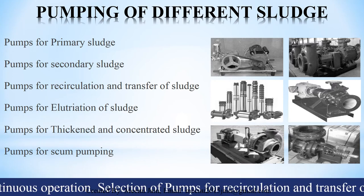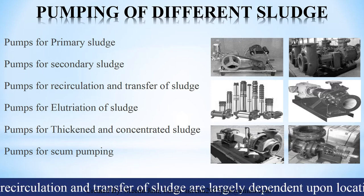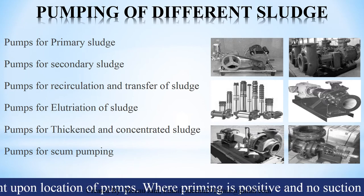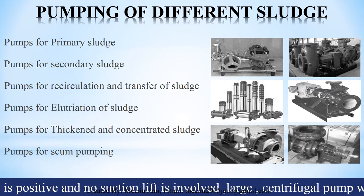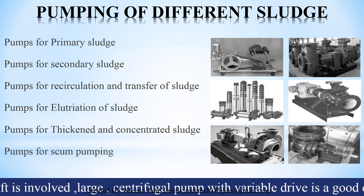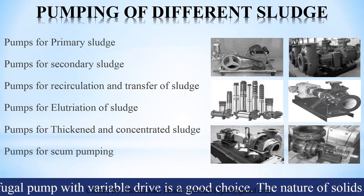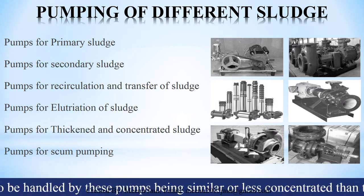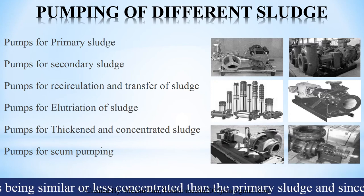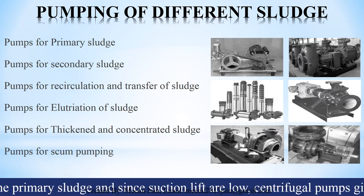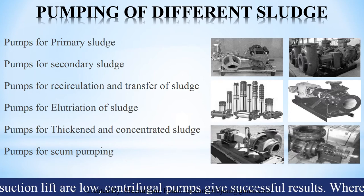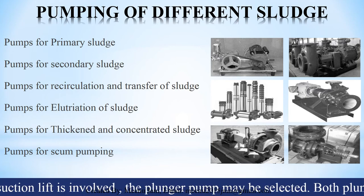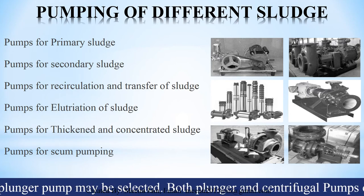Selection of pumps for recirculation and transfer of sludge is largely dependent upon the location of pumps. Where priming is positive and no suction lift is involved, a large centrifugal pump with variable drive is a good choice. The nature of solids to be handled being similar or less concentrated than primary sludge, and since suction lifts are low, centrifugal pumps give successful results. Where suction lift is involved, plunger pumps may be selected.